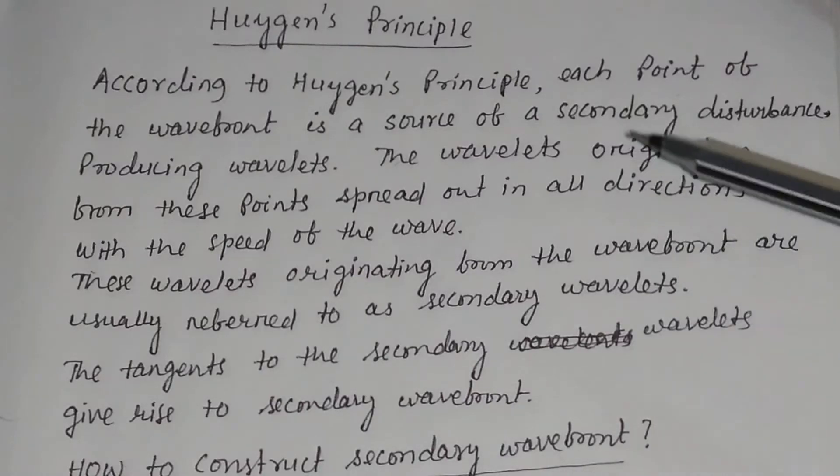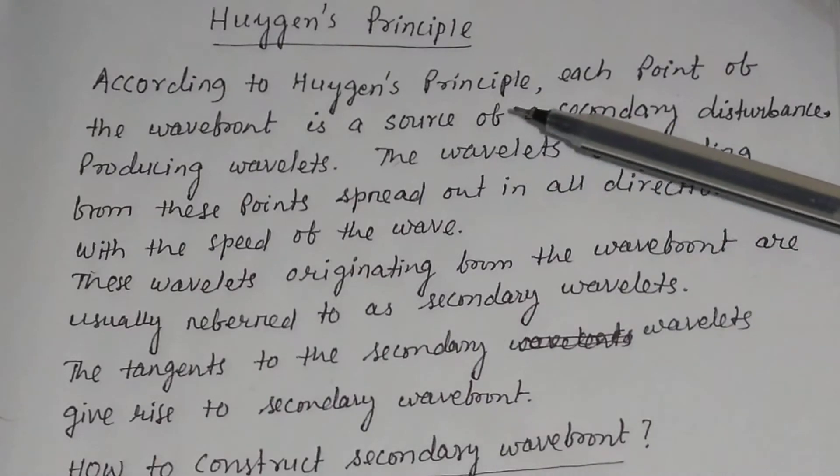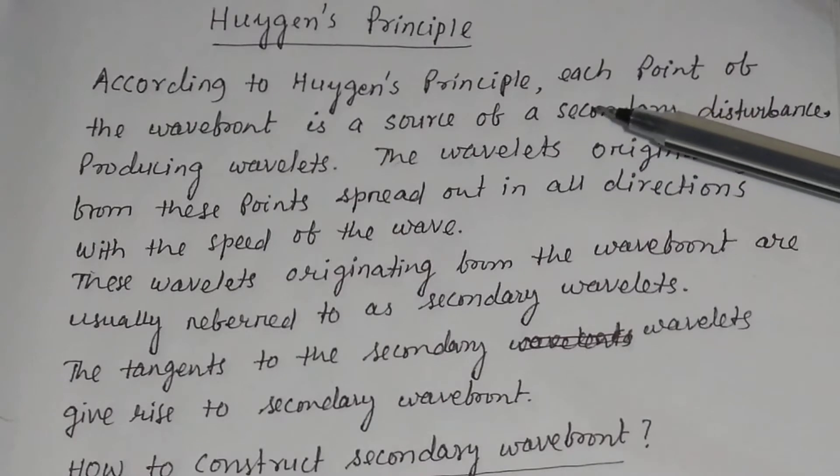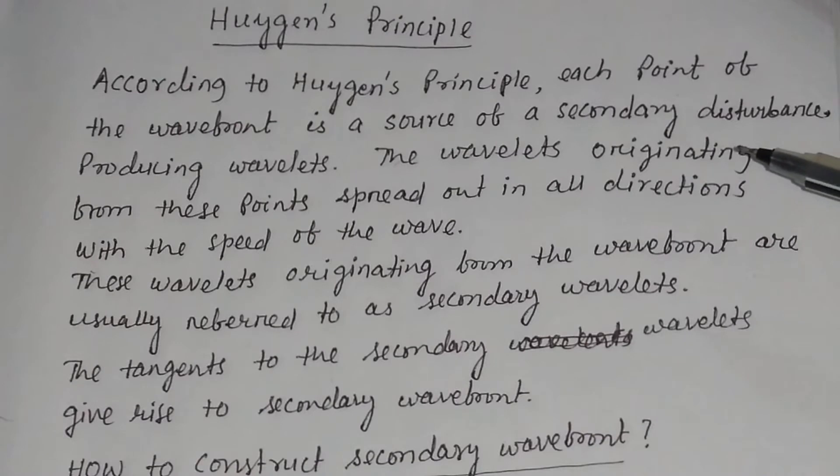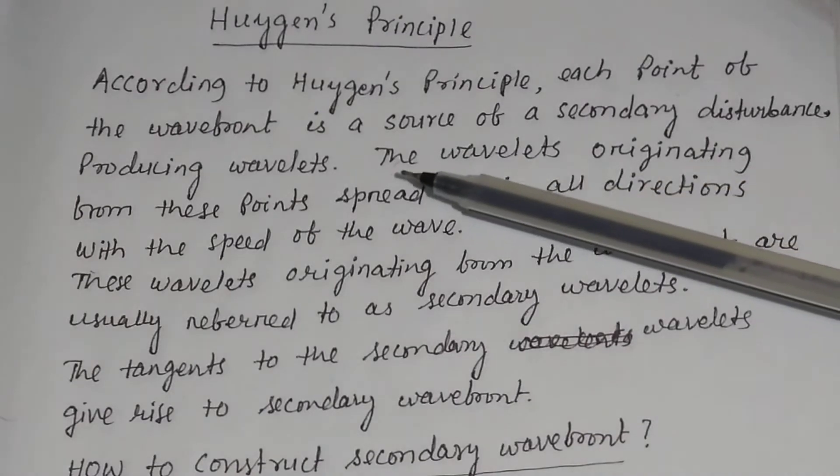Huygens' Principle. According to Huygens' Principle, each point of the wavefront is a source of a secondary disturbance, producing wavelets.